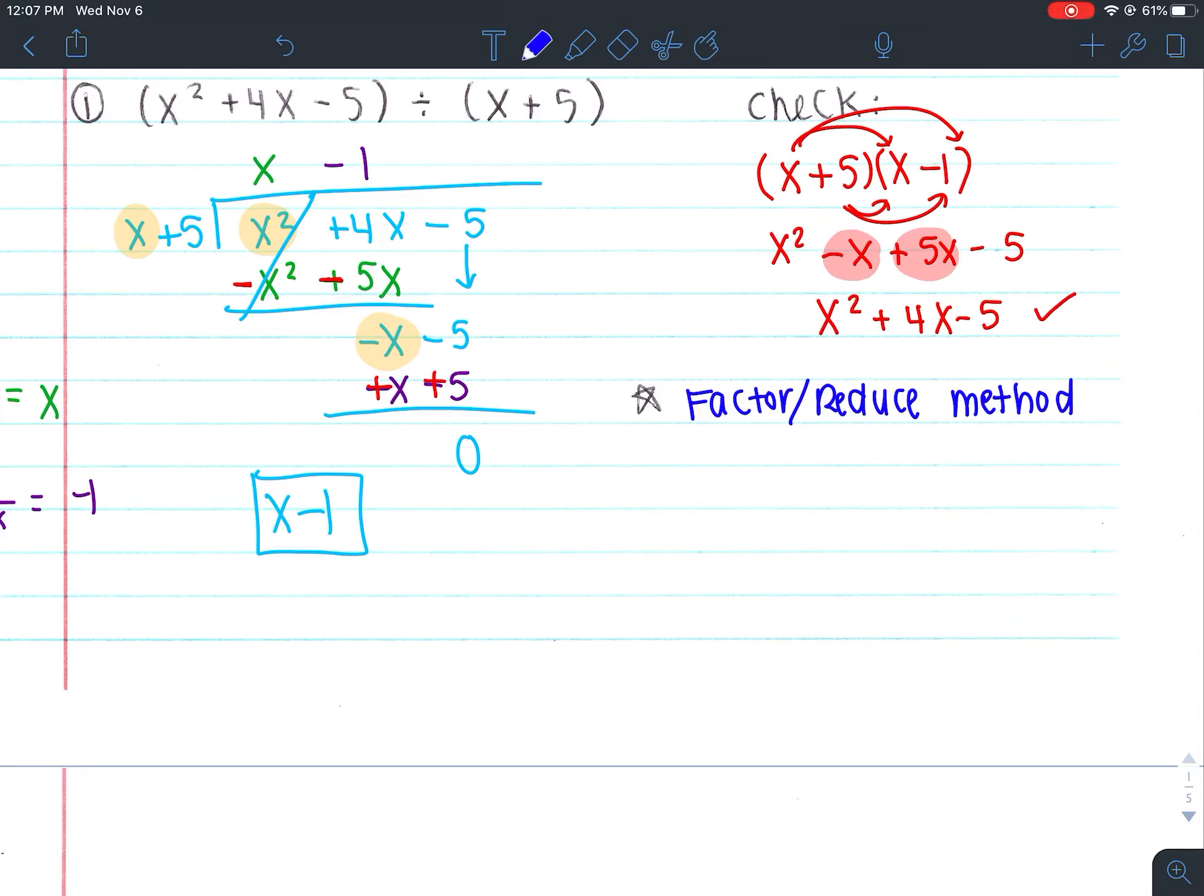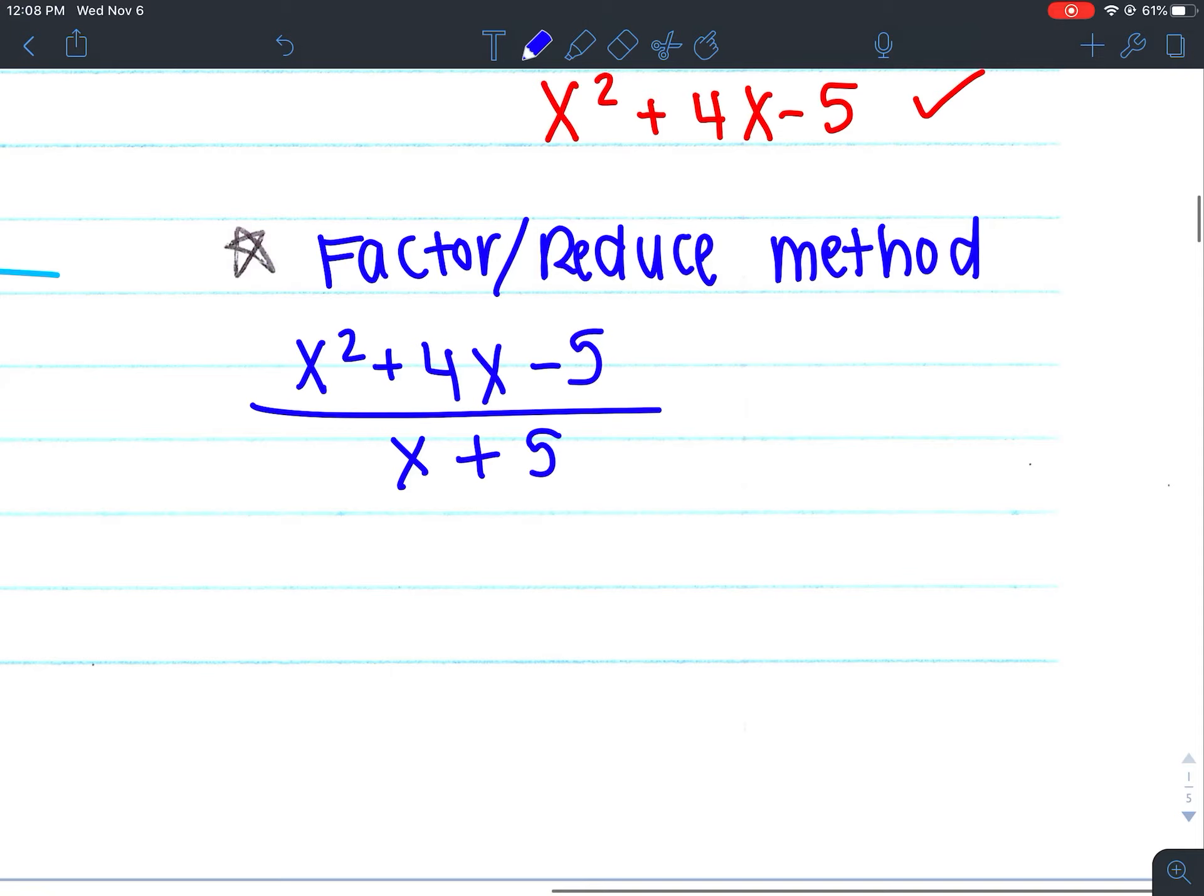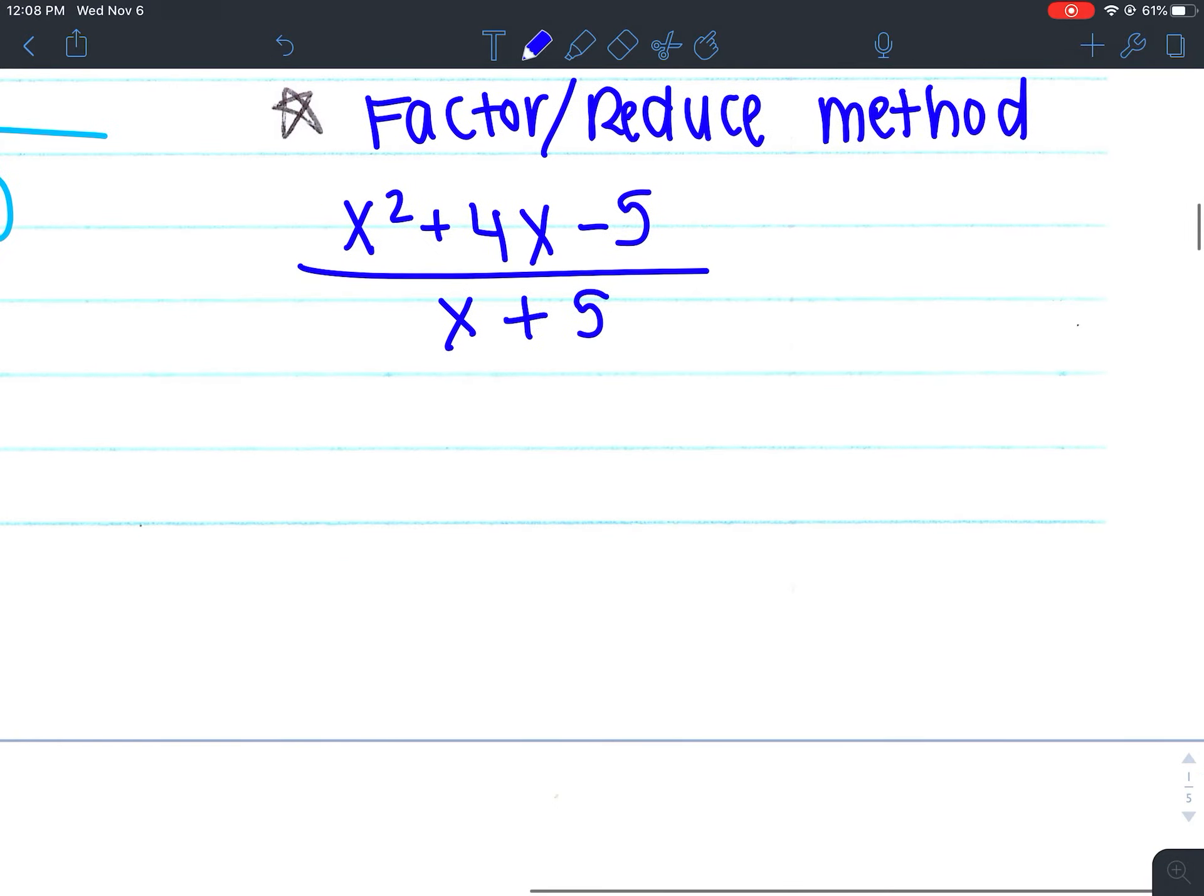So instead of using a division house, we're going to set it up as x² + 4x - 5 divided by x + 5. So it's kind of like when we divide and how 1 divided by 2 is the same thing as 1 over 2.